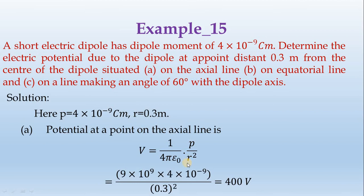V equals 1 divided by 4π epsilon naught, P divided by R squared. 1 divided by 4π epsilon naught is 9 × 10^9. P value is 4 × 10^-9. Plus 9 minus 9 cancel, leaving 0.3 squared. If we cancel it, we have 400 volts.